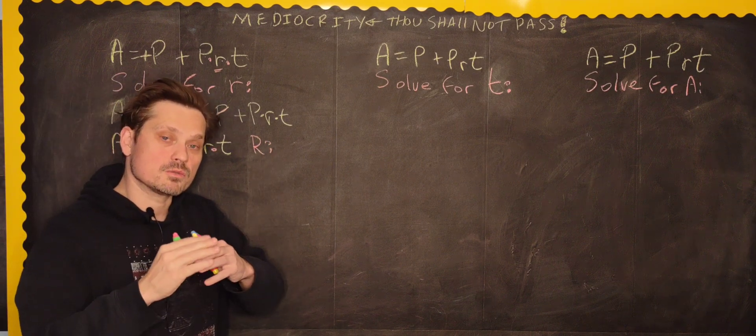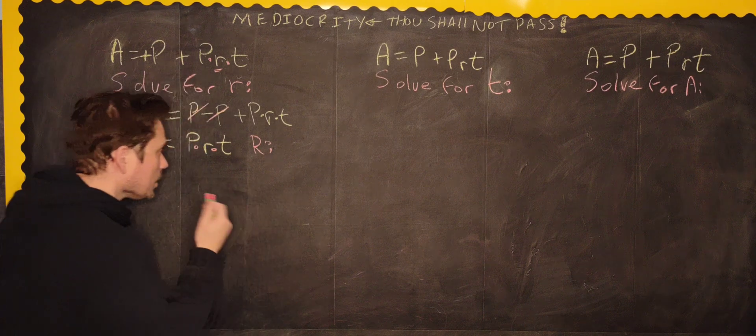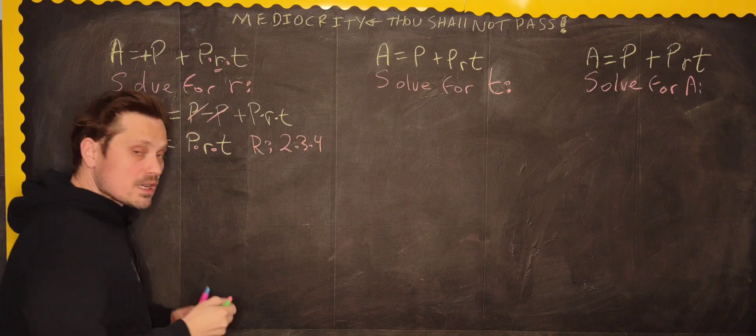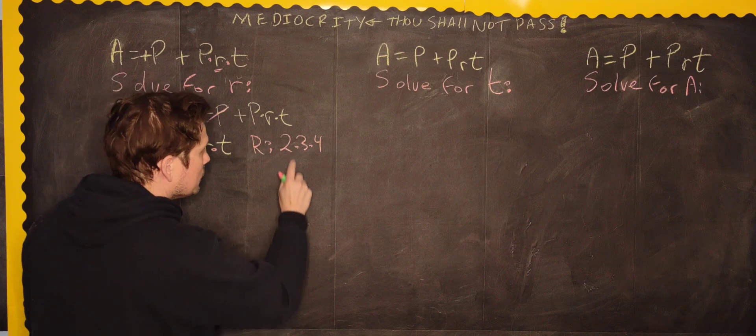When you're multiplying, for example, like 2 by 3 by 4, it doesn't matter how you group things. If you multiply this out, 2 times 3 is 6, 6 times 4 is 24, right there.